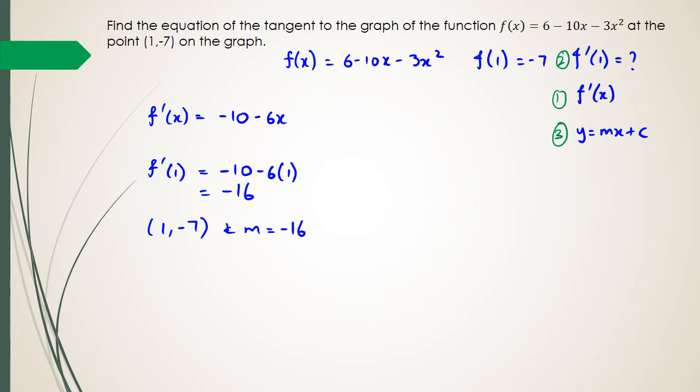So, now it's a matter of substituting everything into the equation. So, the x value is 1 and the y value is negative 7. And the equation of our straight line is y equals mx plus c. We need to figure out what that c value is.